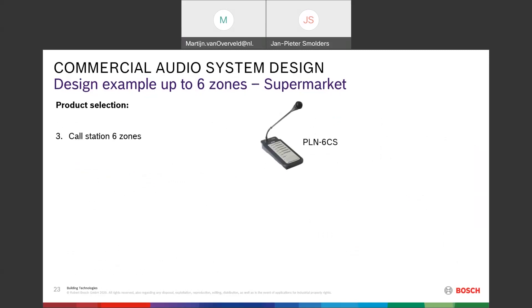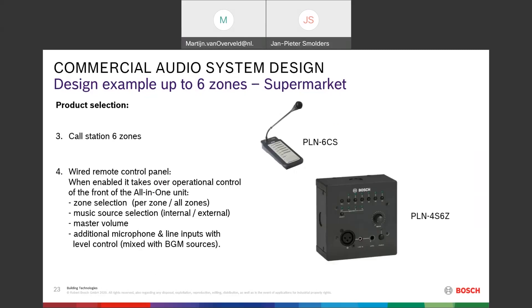For announcements we need a call station — there is a dedicated six-zone call station for this system. There is also a remote wall panel that takes over control of the device. As you can see on the picture, you can make a zone selection, select your music source, adjust master volume, and connect an additional microphone or line input via mini jack or XLR.